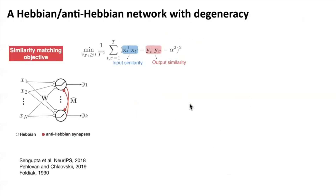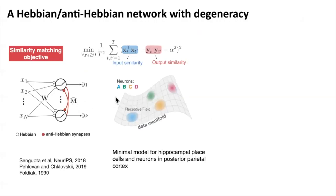To test this hypothesis, we use a biologically plausible network called the Hebb-under-Hebb network. This network optimizes an objective function called similarity matching, where similarity is defined by the inner product of two vectors. Basically, this network is trying to preserve the pairwise similarity of input data or neural activities. It has also been shown that this simple network can learn localized receptive fields to tile the input data manifold, providing a minimal model for brain areas where neurons have localized receptive fields, such as hippocampus place cells.